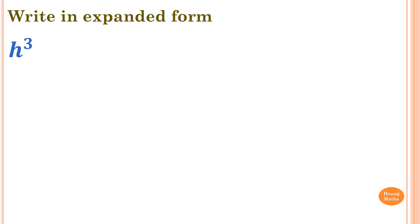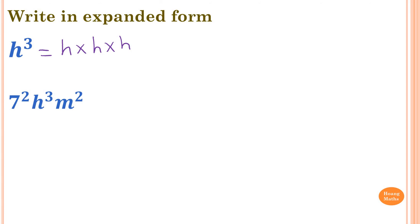Now write H to the power of 3 in expanded form. H to the power of 3 is H times H times H. Now 7 squared is 7 times 7. H cubed is H times H times H. And M squared is M times M.